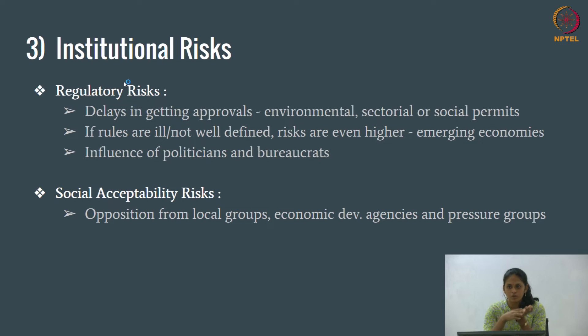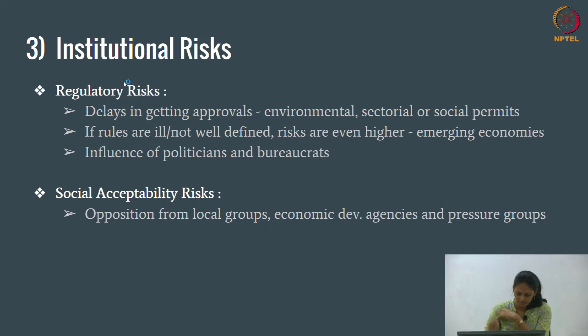Social acceptability risks — like in the Cochabamba water supply case, there were social risks: opposition from people, agencies, and pressure groups. Sovereign risks occur when a government that initially gave a contract renegotiates it. This can happen due to regime changes, creating a hostile environment for private investment, or due to pro-competition policy changes — such as decreasing toll fares or tariff rates to encourage competition.